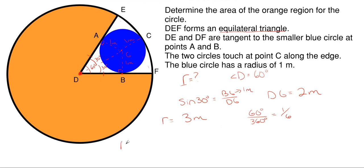So the area shown in orange would just be five-sixths of our total circle area. So that'd be five-sixths times pi r squared.